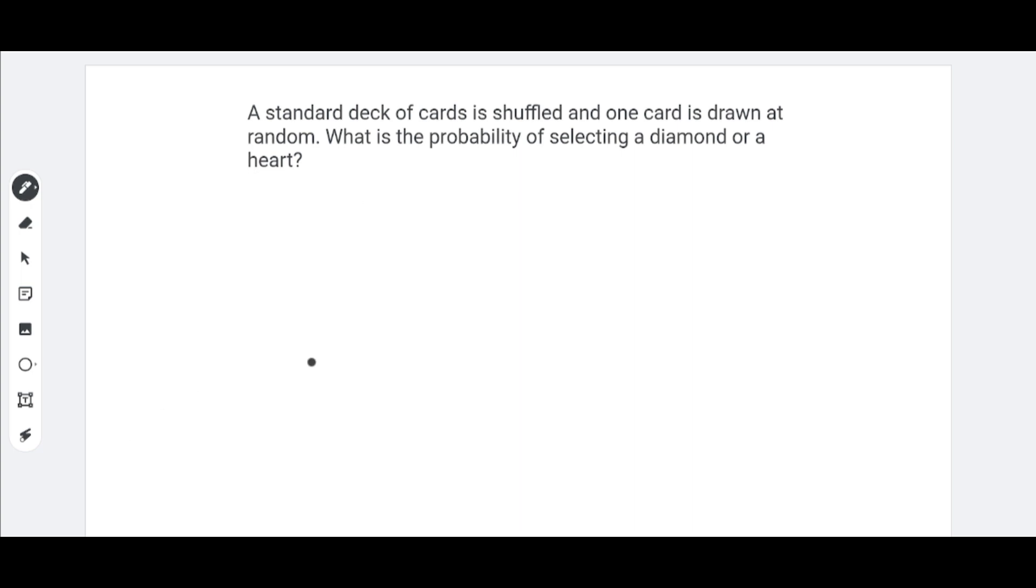Okay, let's go over the solution. Take your time and pause this video if you need to. So, a standard deck of cards has 52 cards. And we have diamonds, hearts, spades, and clubs. So, there would be 13 diamonds and 13 hearts because 13 times 4 is 52.